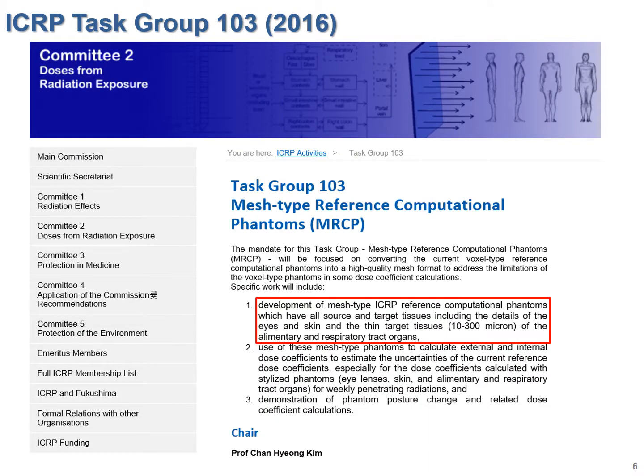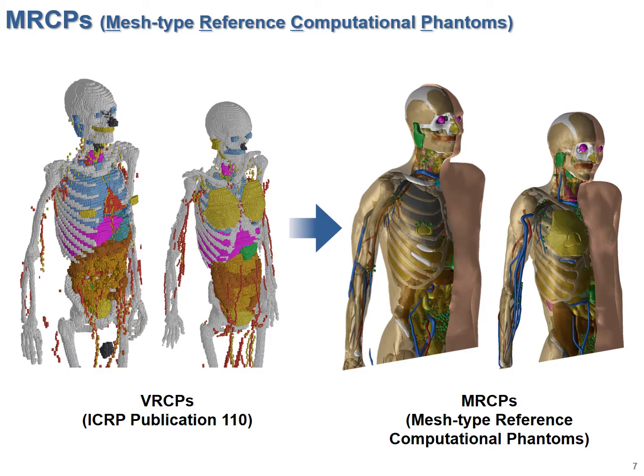Acknowledging these limitations, two years ago the ICRP formulated Task Group 103 under the lead of Professor Chan-yong Kim, my advisor. The main objective of this task group is to convert the current voxel type reference phantoms into high-quality mesh formats. Recently, we have completed the conversion work for adult phantoms, and the ICRP publication on these new adult reference phantoms will be released next year.